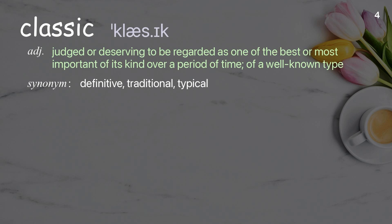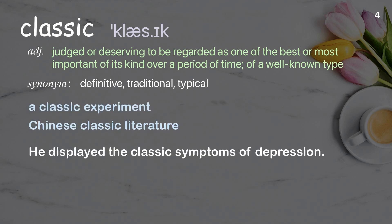Classic: judged or deserving to be regarded as one of the best or most important of its kind over time; of a well-known type. Examples: a classic experiment, Chinese classic literature. He displayed the classic symptoms of depression.